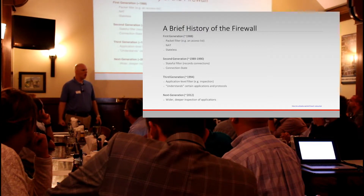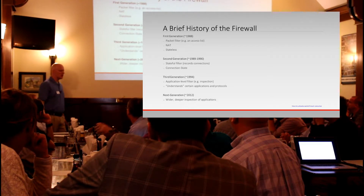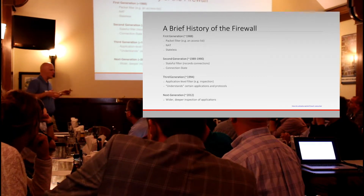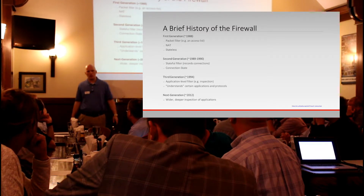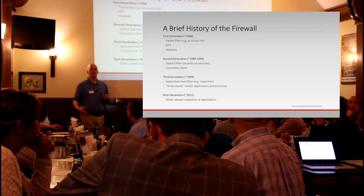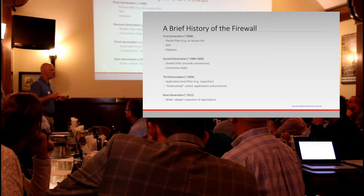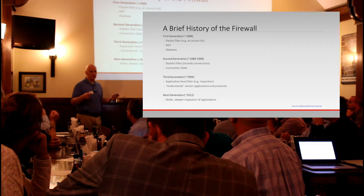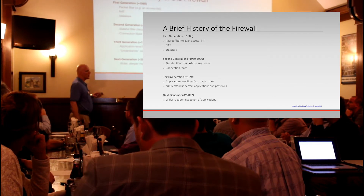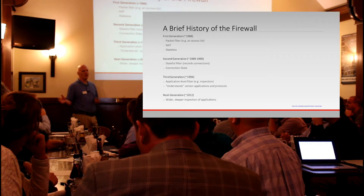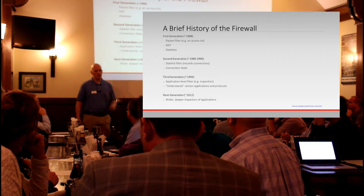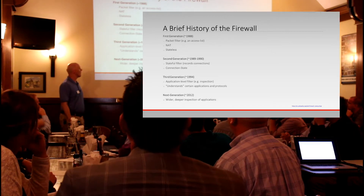The third generation firewall introduced application visibility — an application level filter. In a Cisco world, that's what you call inspection. For a subset of ports and protocols, it understands how those protocols normally work. It knows how FTP works, how SMTP works. And if some rogue application tries to hijack one of those ports and protocols and make it behave in a way that it's not supposed to, then your application filter will say that's not quite right, and it'll shut down the connection. That was only for a very small subset of well-known applications.